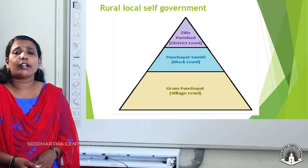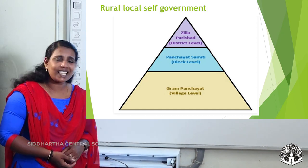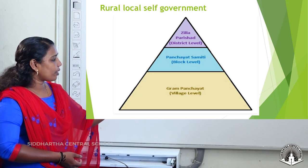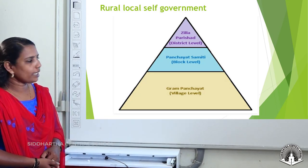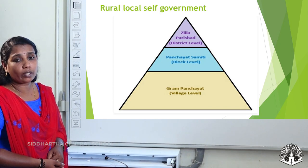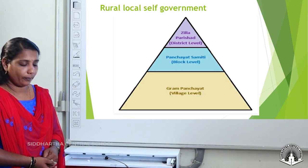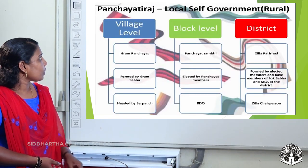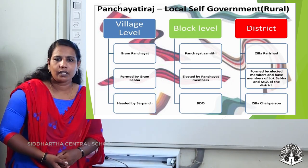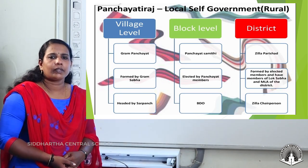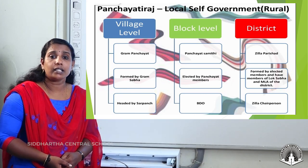Now, let us come to local government in the rural area. We can see that there are three levels. The first one is at the village level — they are known as Gram Panchayat. The second one is Panchayat Samiti, at the block level. And the last is Zila Parishad, at the district level. At the village level, each village or a group of villages has a Gram Panchayat.